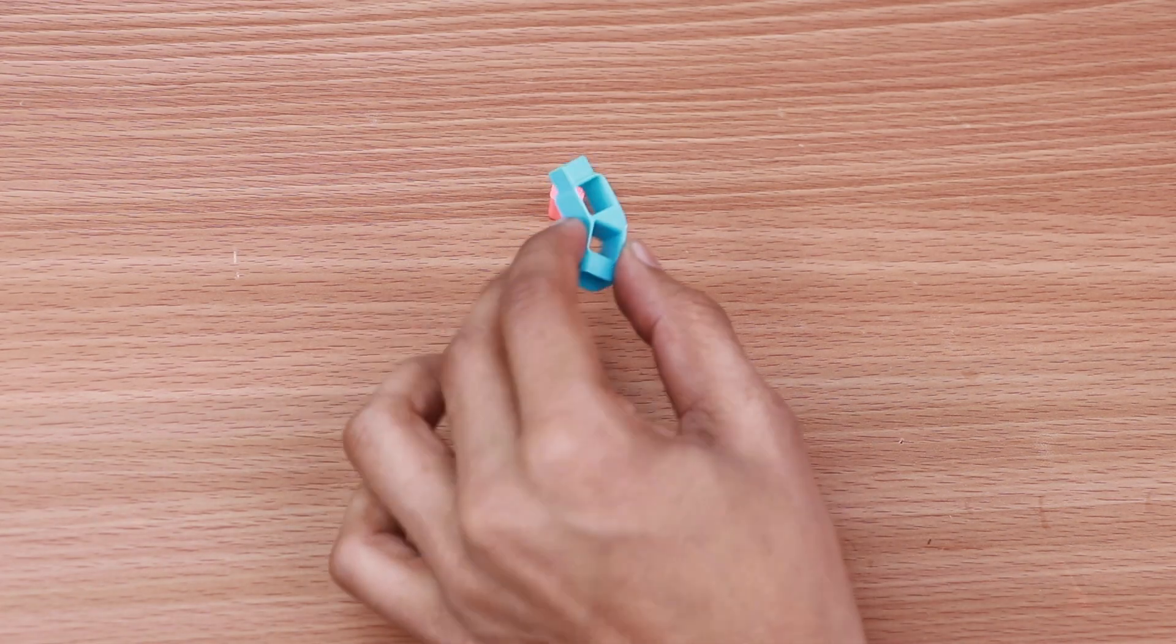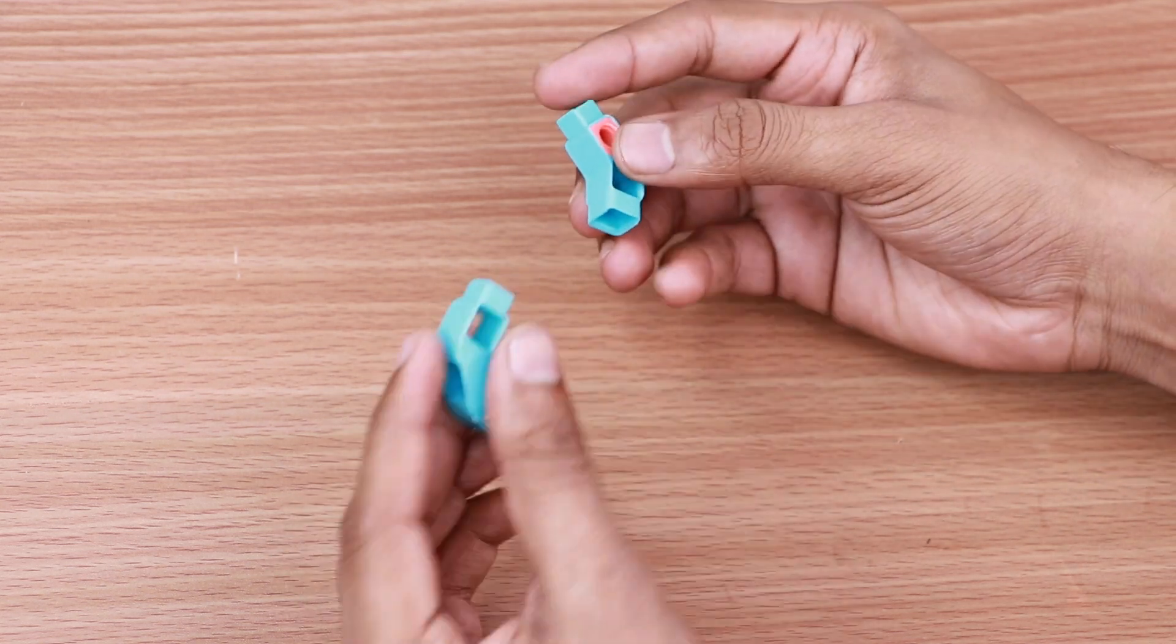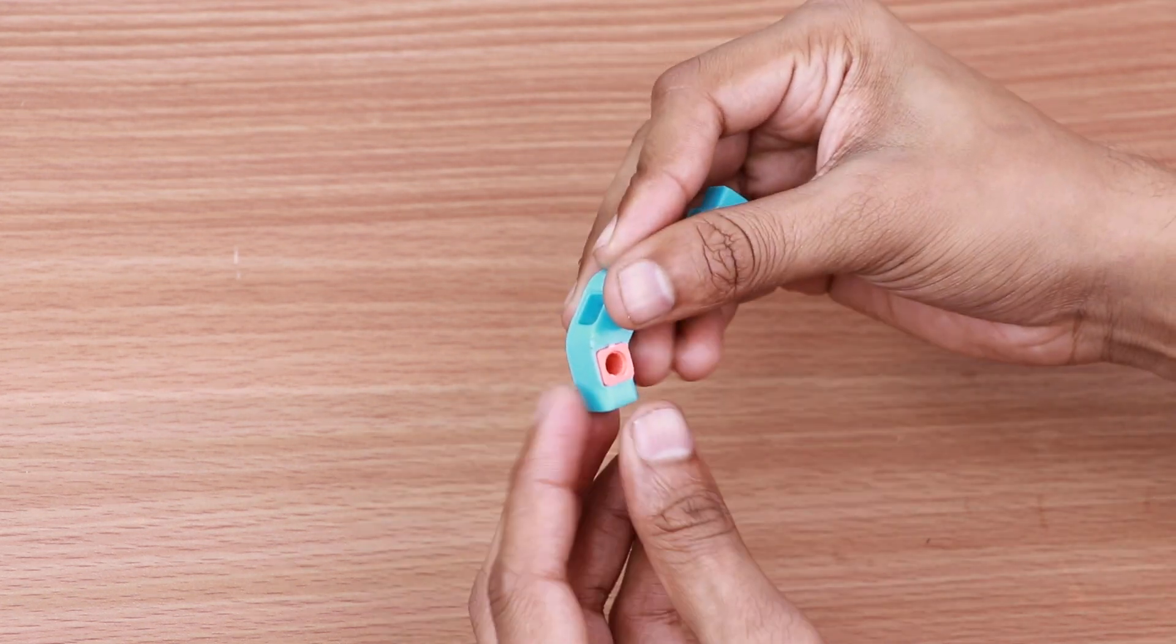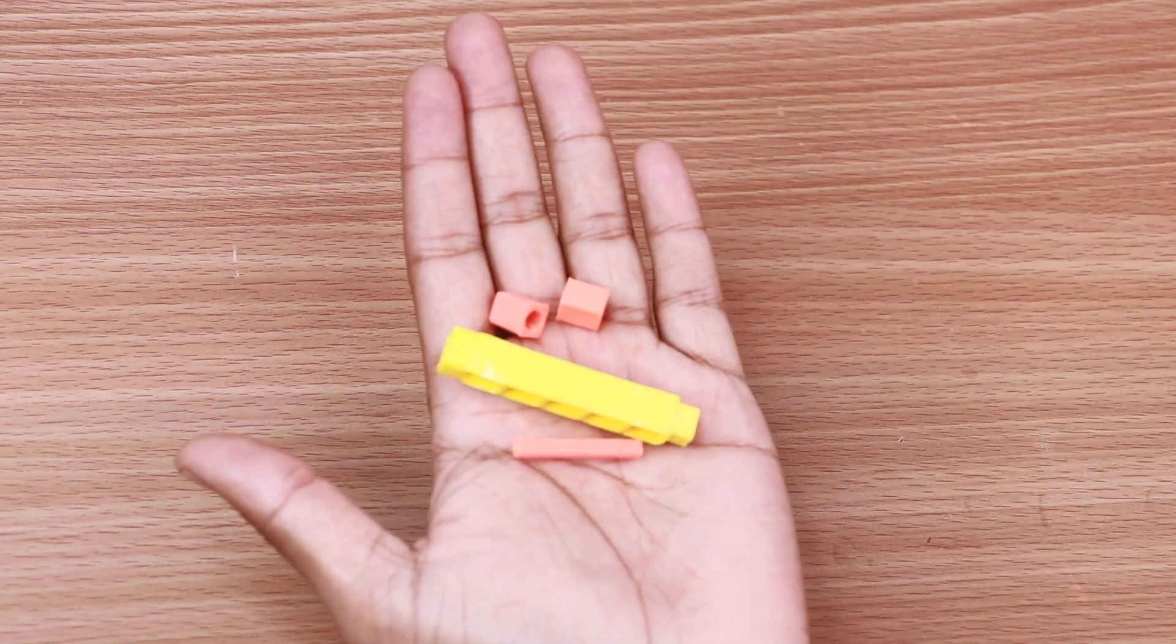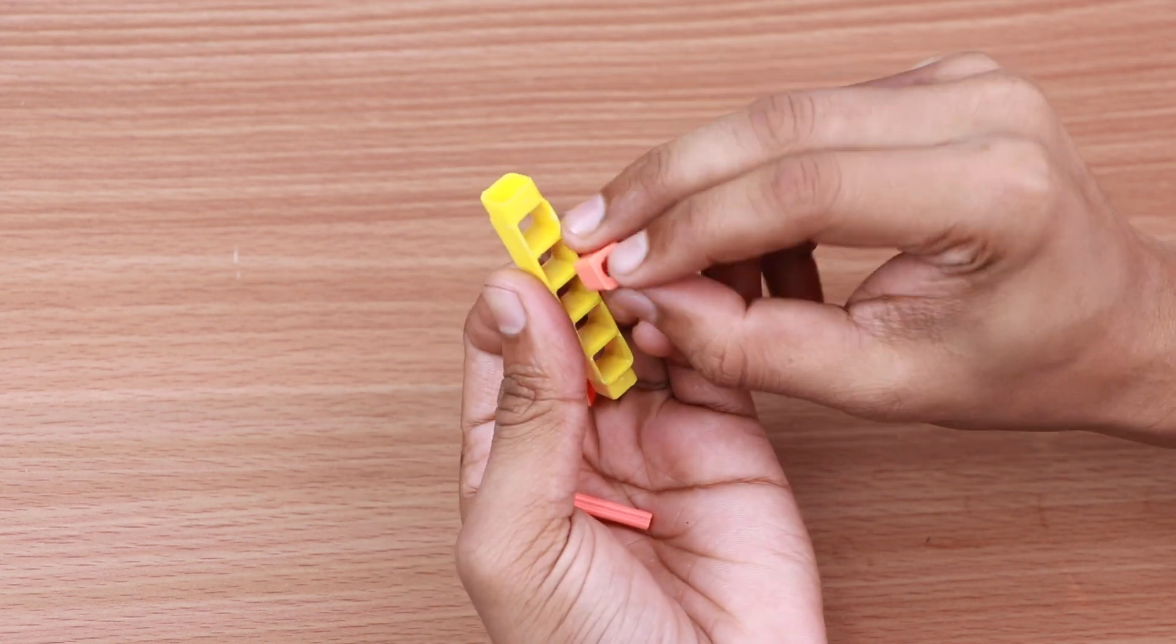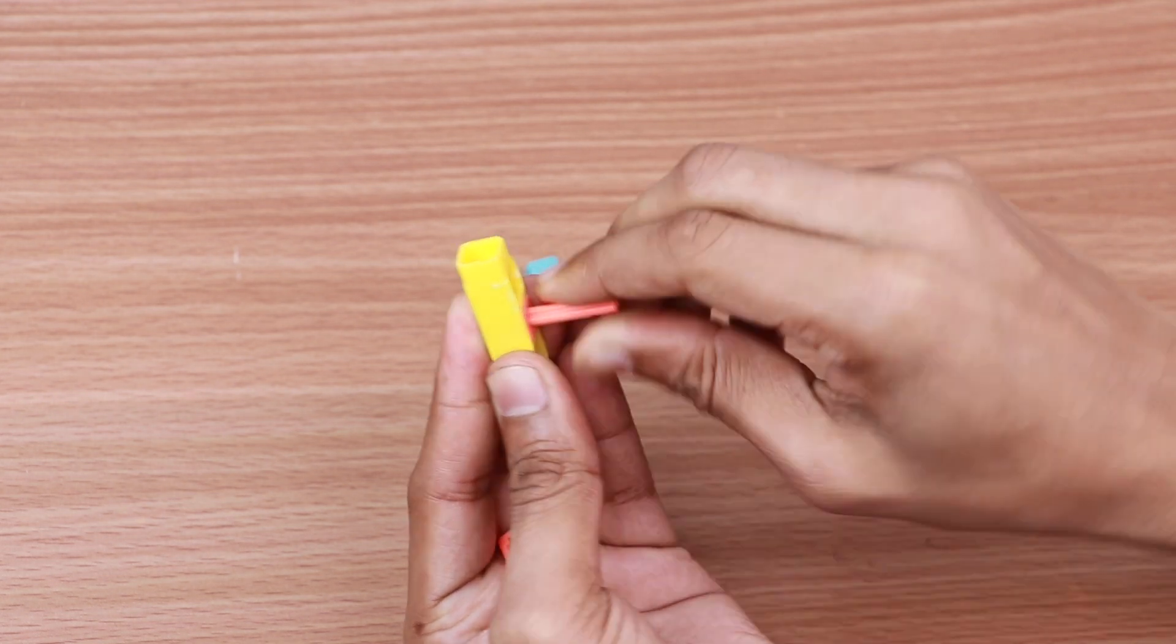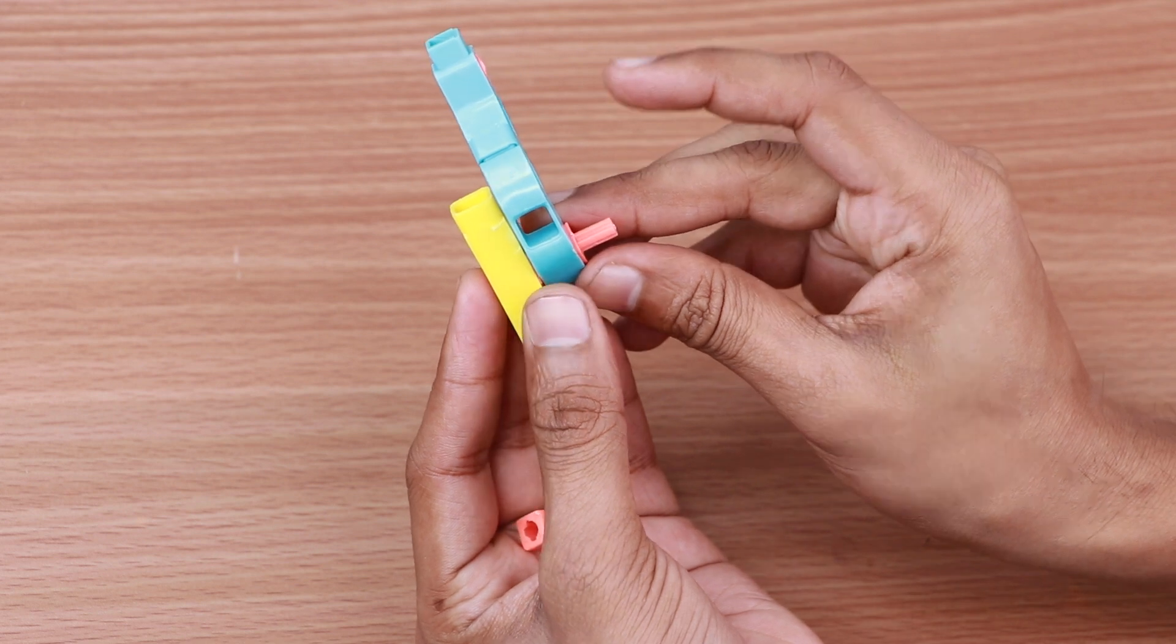Take 2 male axle couplers, 1 2-hole elbow and 1 3-hole elbow and join them. Now take 2 BO shafts, 1 5-hole beam and 1 30mm small axle and join them. Join the 2 parts together.